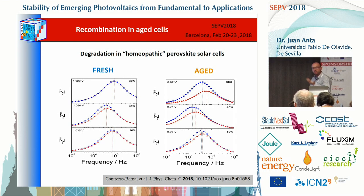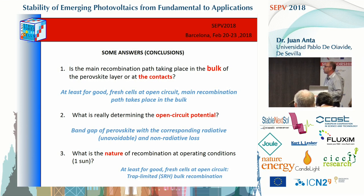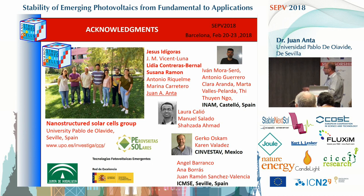To conclude: for good perovskite cells at open circuit, the main recombination path takes place in the bulk. What determines the open-circuit potential is the band gap of the perovskite together with the corresponding radiative and non-radiative losses. The nature of recombination for good perovskite cells at open circuit is trap-limited Shockley-Read-Hall recombination, with an ideality factor of approximately 2. Thanks to my research group in Seville, our collaborators, and the funding agencies, and thank you for your attention.